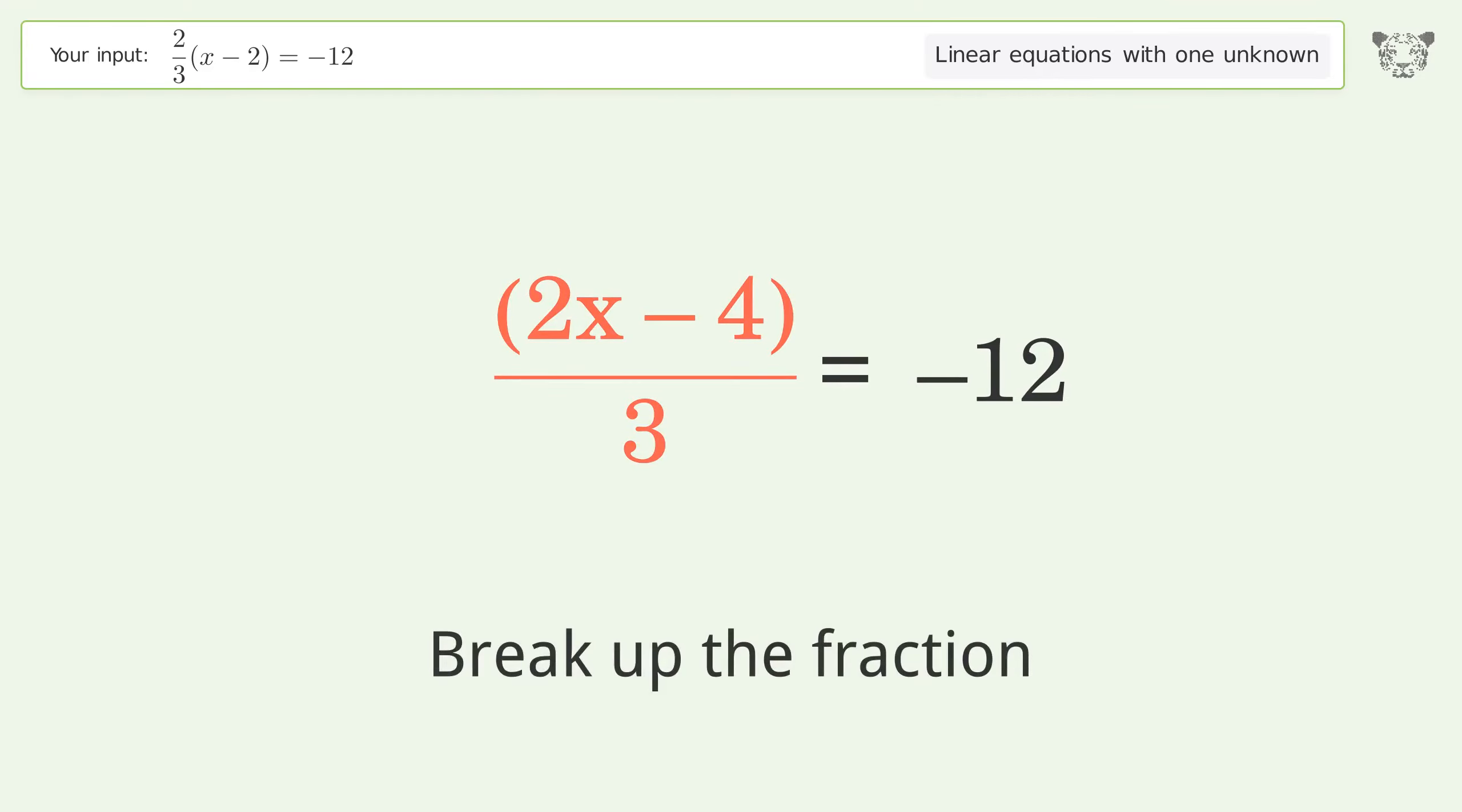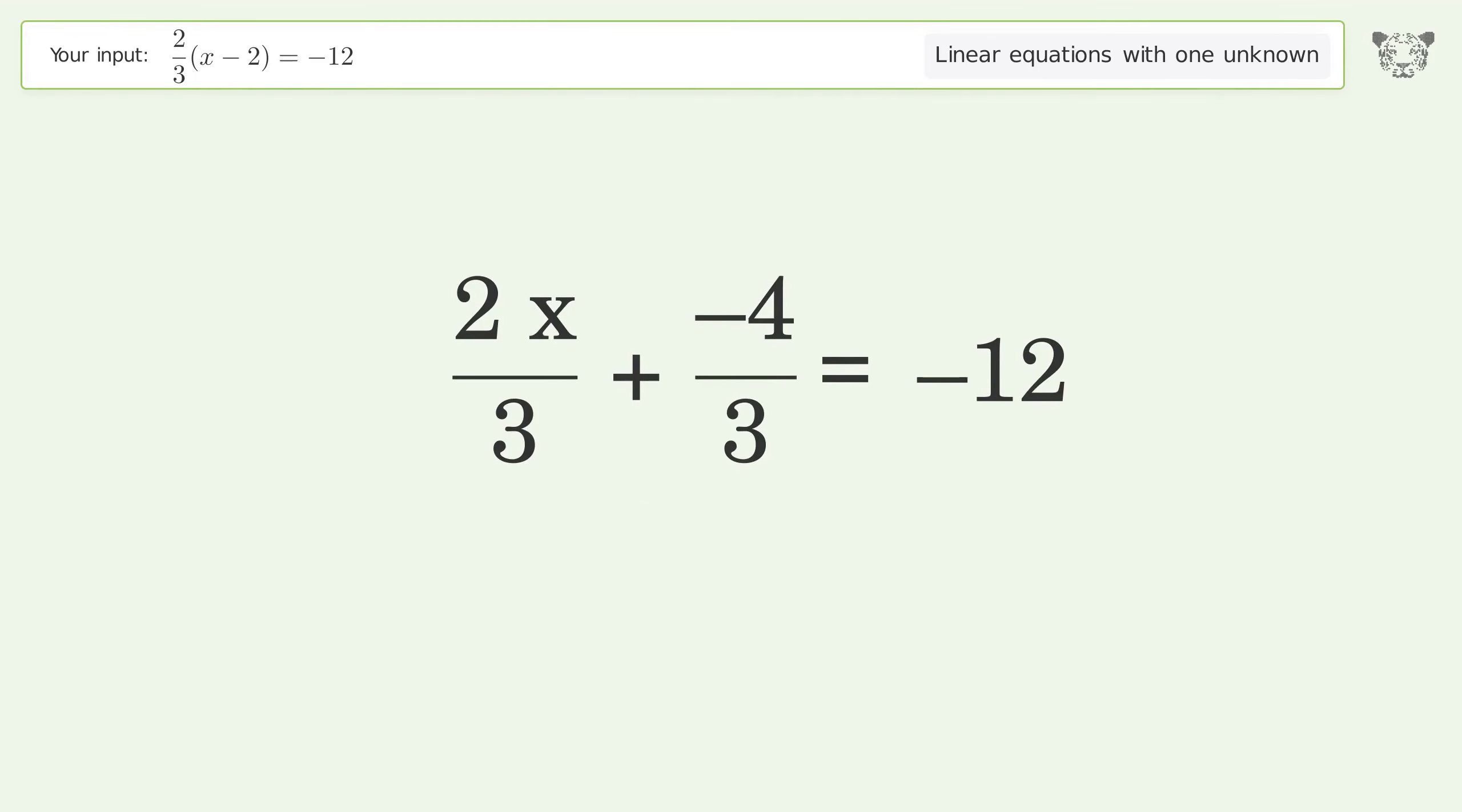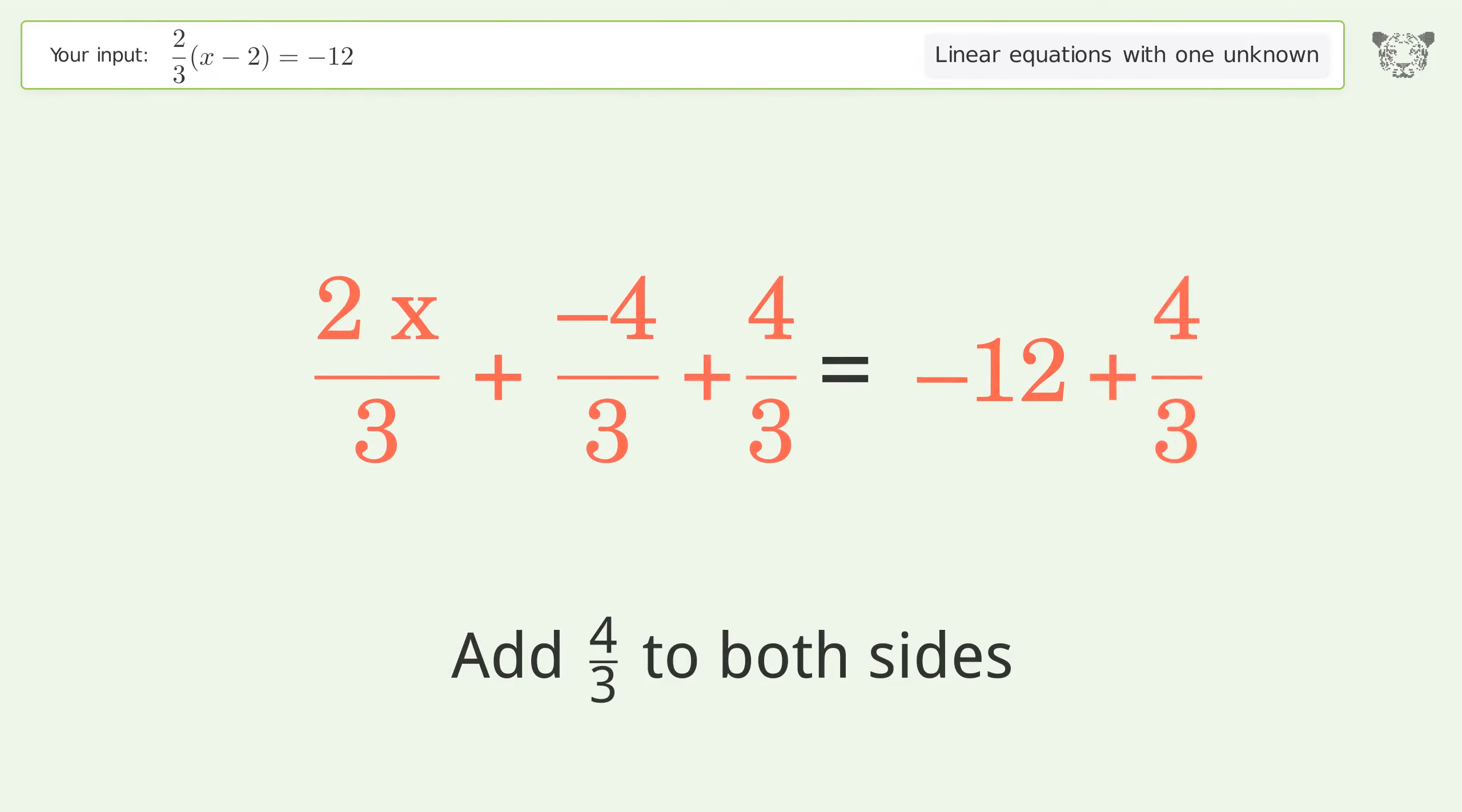Break up the fraction. Group all constants on the right side of the equation, add 4 over 3 to both sides. Combine the fractions.